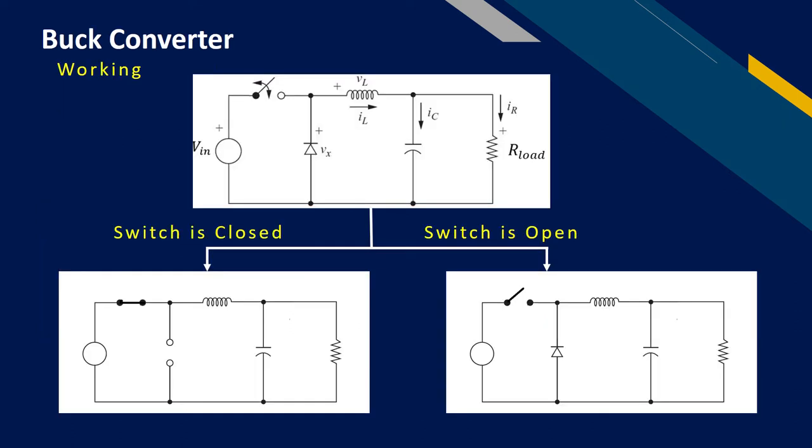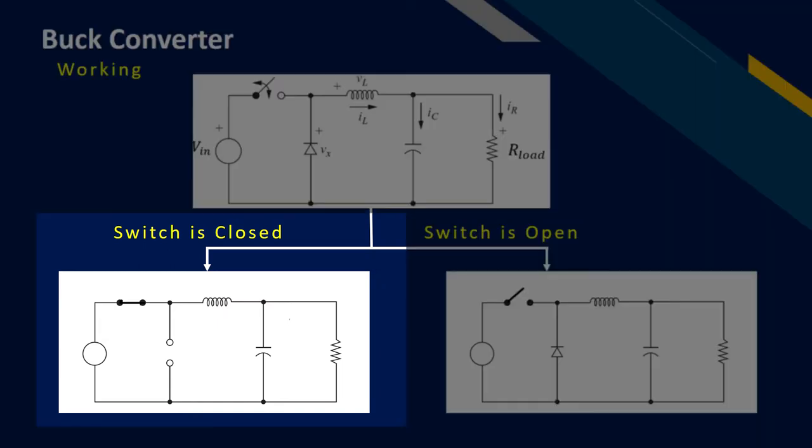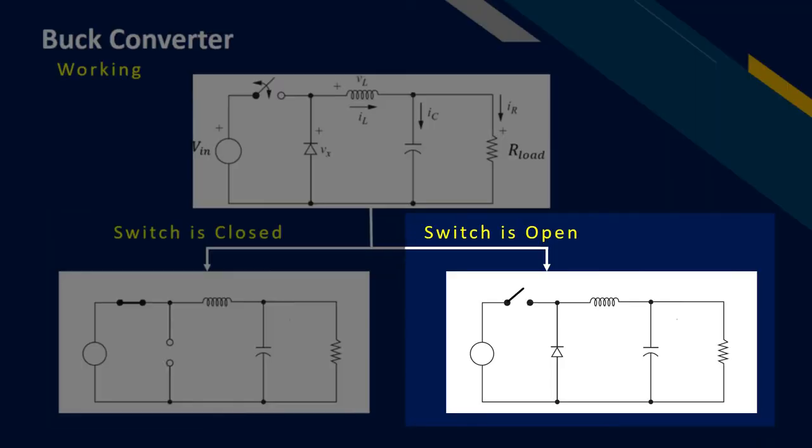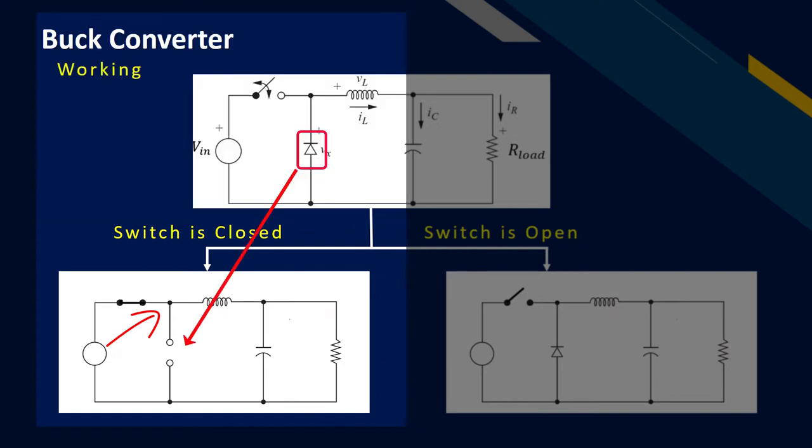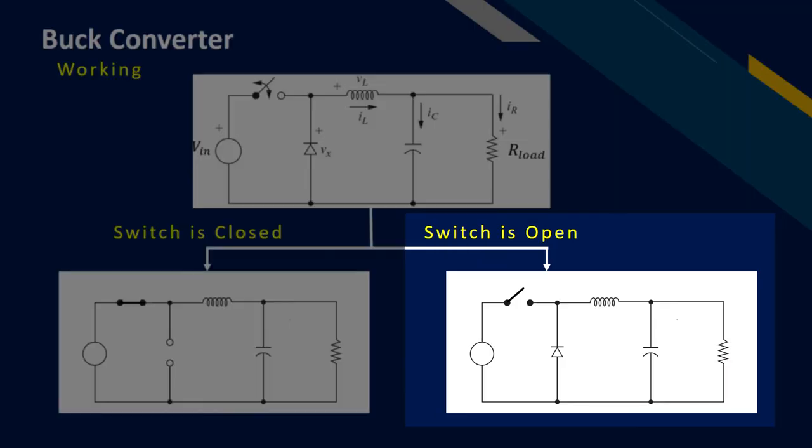Let's discuss the working of the buck converter. We can split the working into two cases. One, when the switch is closed, and second, when the switch is open. Observe that when the switch is closed, the source voltage is directly connected to this node due to which this diode will become reverse biased and become open. And when the switch is open, this diode becomes forward biased and becomes closed.